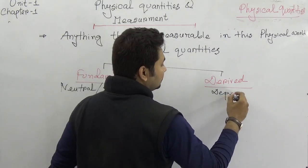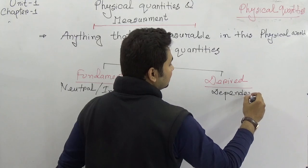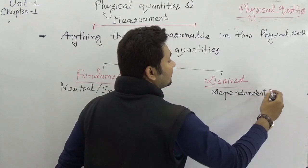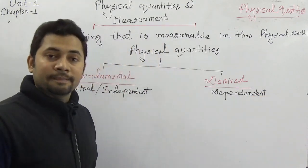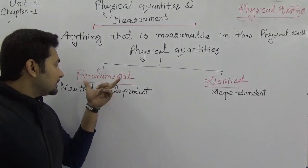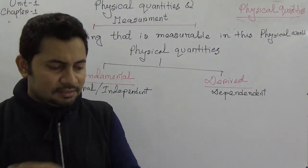Fundamental quantities are those that are independent and neutral — they don't depend on other quantities, but other quantities depend on them. Derived quantities, on the other hand, are dependent on the fundamental quantities.